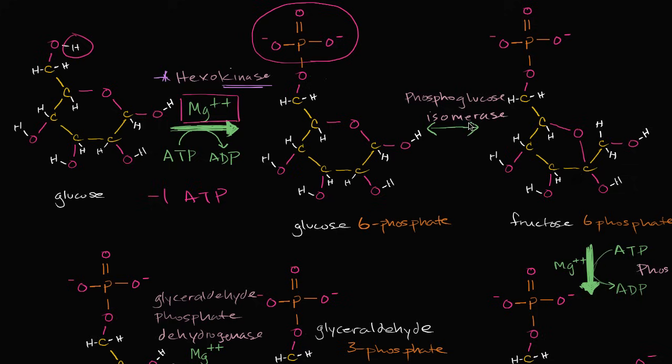But the enzyme that facilitates this, phosphoglucose isomerase. Isomerases, these are enzymes that help grow from one isomer of a molecule to another isomer. And that's what's happening here. Instead of this oxygen being bound to this carbon, this bond forms with this carbon.